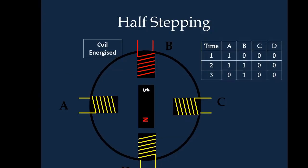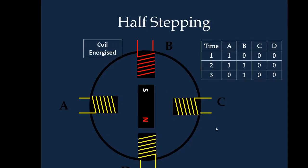In the next instant 3, only B is energized so it has moved to this position. In the next instant B and C will be energized so it will move accordingly and similarly it goes on. If you see the half stepping sequence: first one coil is energized, next two, then one, then two — and so on. The corresponding byte codes are represented here. For example, 1 0 0 0 is 8, so it is represented as 08. This byte code can vary depending upon the interface pin assignment.